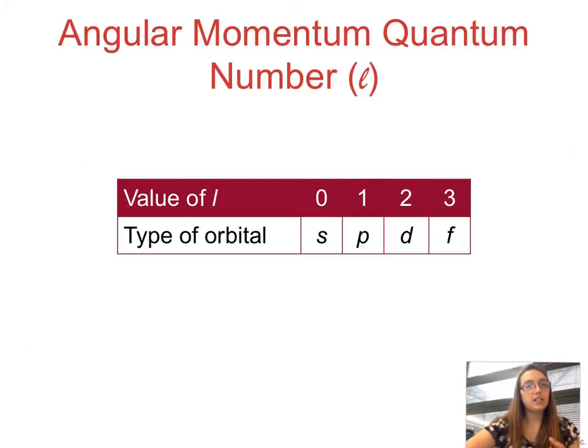So like I just mentioned, the value of l is designated by a letter. So if l is 0, which is the least that it can be, that means you're in an s sublevel. If it's 1, it's p, 2 is d, 3 is f. If we were to have a value of 4, that would be g, and then we start to just go in alphabetical order. So again, this is useful for us to distinguish or to designate the specific sublevel that we're in.